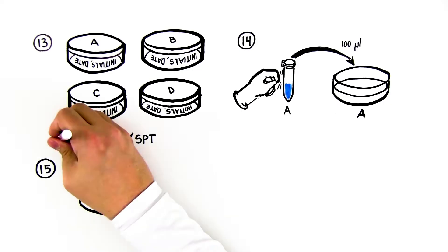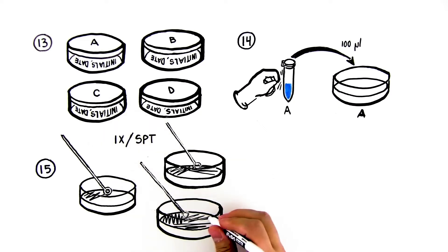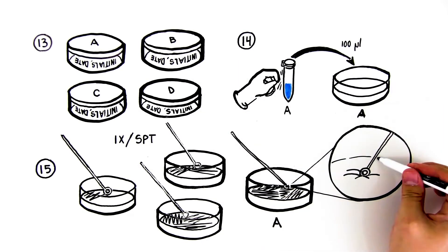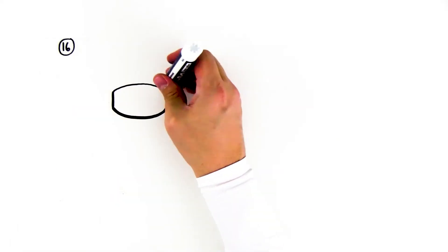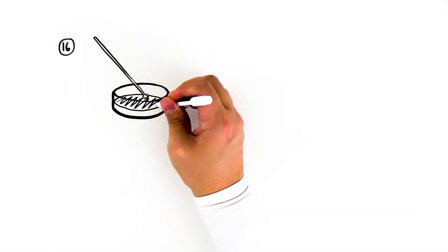Step 15: Using a new inoculation loop, spread the liquid evenly on plate A. Rotate the plate several times in the process. Do not pierce or jab the agar surface. Step 16: Using a new pipette tip and inoculation loop each time, repeat steps 14 and 15 for samples B through D.